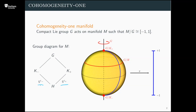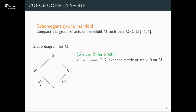This manifold decomposes as the union of two disk bundles over the singular orbits, with common boundary being the principal orbit G/H, and the boundary of each disk bundle is a sphere bundle. The spheres in the group diagram encode the codimension of the singular orbits. The nice thing about this group diagram description of cohomogeneity one manifolds is that it's a one-to-one correspondence — if you write down such a diagram you can always construct a cohomogeneity one manifold corresponding to it.